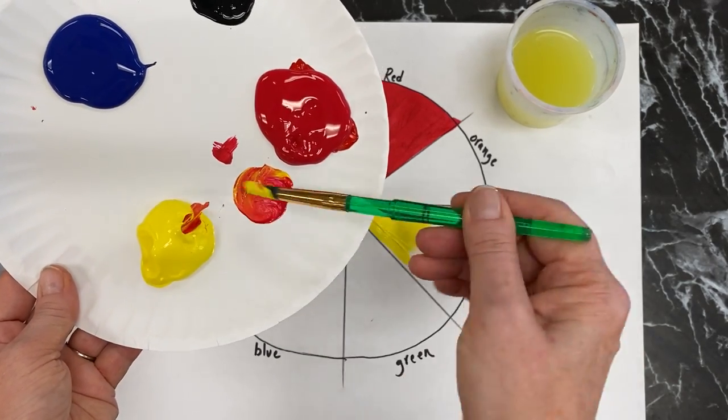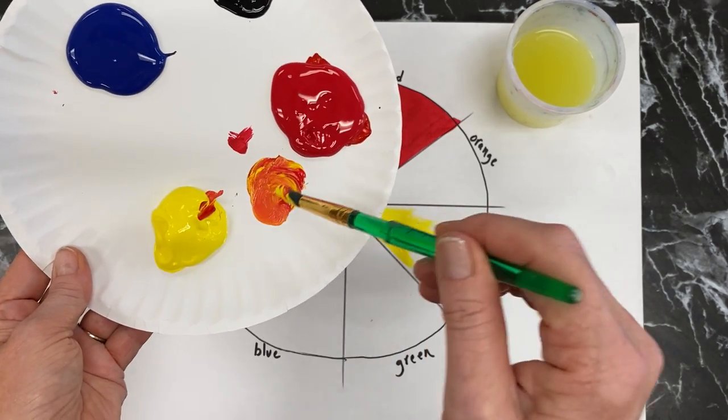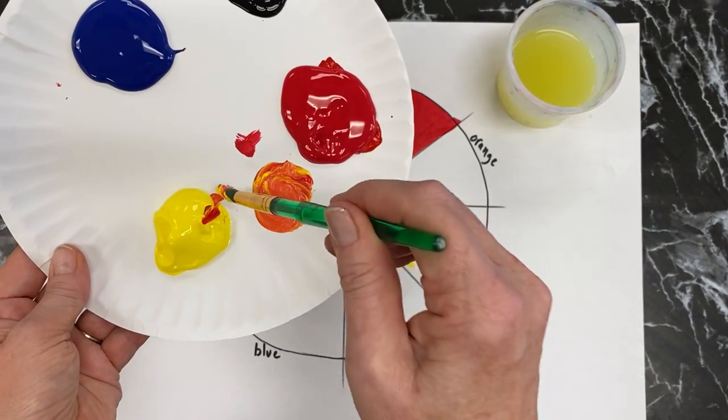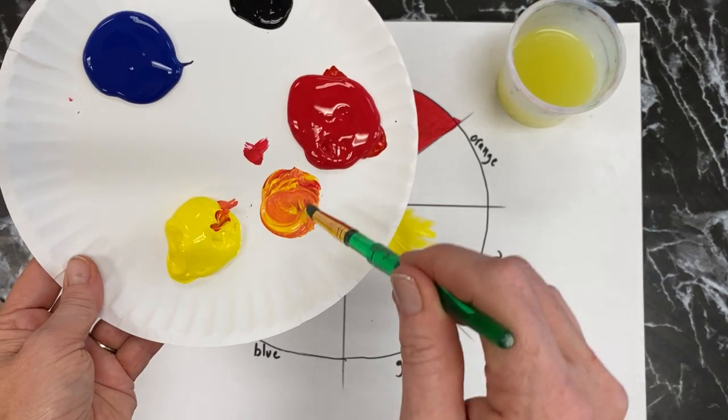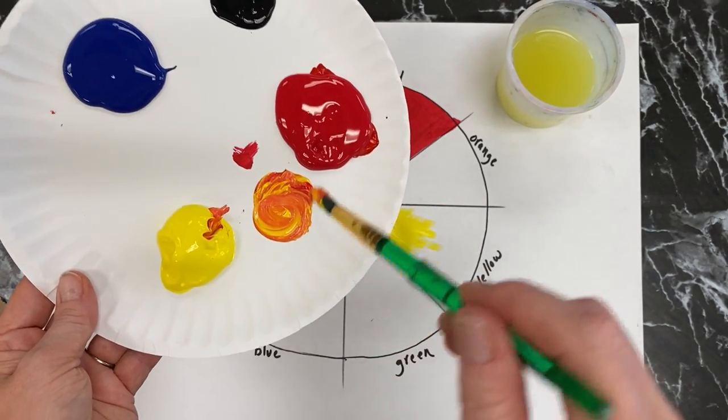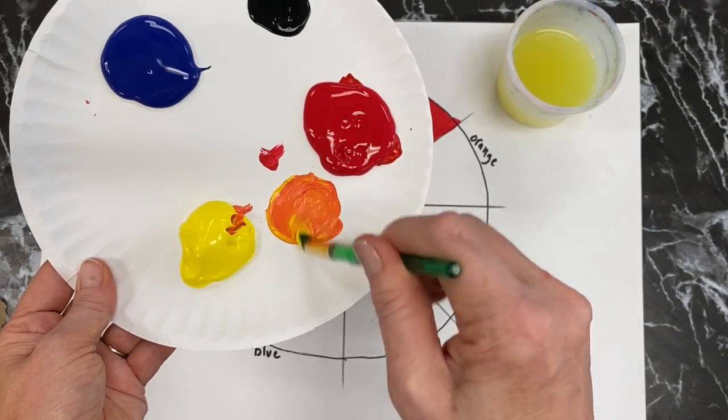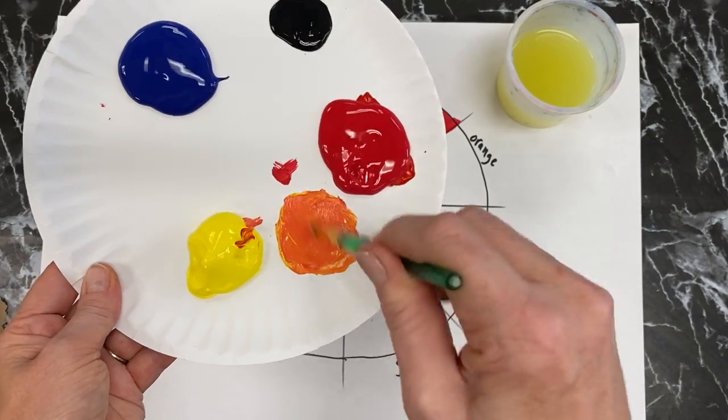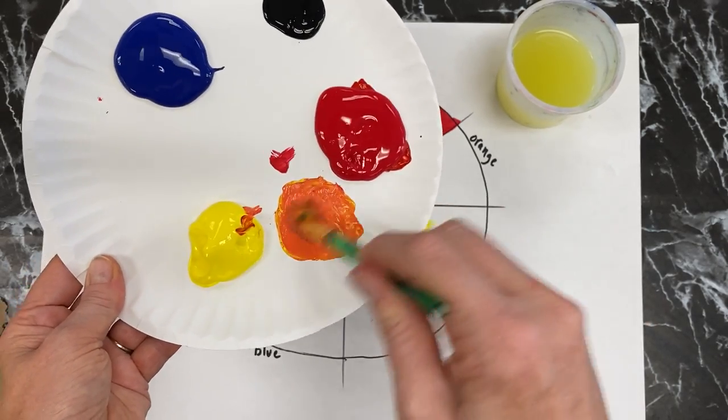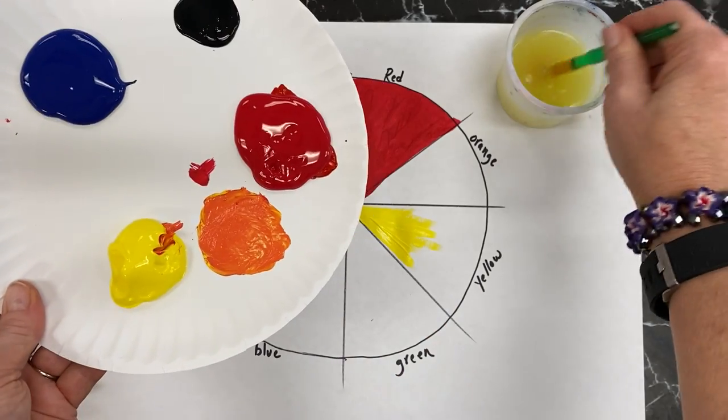So to get orange, mix a little bit of red and a little bit of yellow. And a little tip or hint with color mixing is adding more of your lighter color, and that helps you get a little bit more accurate color.